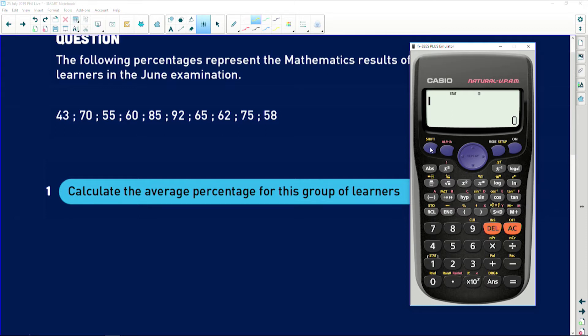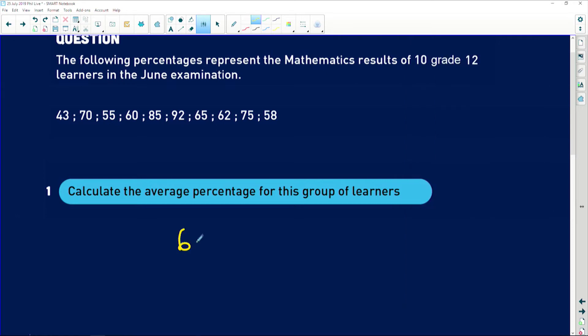And now to work with it, you say shift one for stats. And because we're looking for mean, which is a type of variance, you press four for variance. And the mean is given by that X bar over there. So you say two and equals. And the mean is 66.5 percent. Easy peasy.